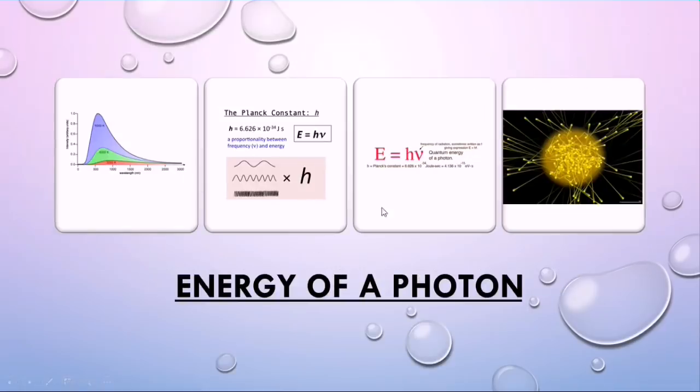So back to this equation, E is equal to H nu. On left hand side is energy of a photon in joules and on right hand side is frequency of electromagnetic radiation. So left hand side is energy of a particle and right hand side is frequency of a wave. This is absolutely amazing.